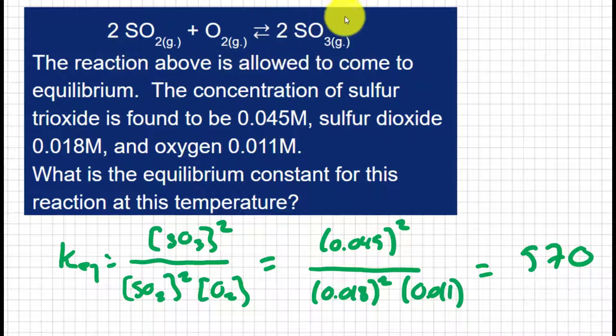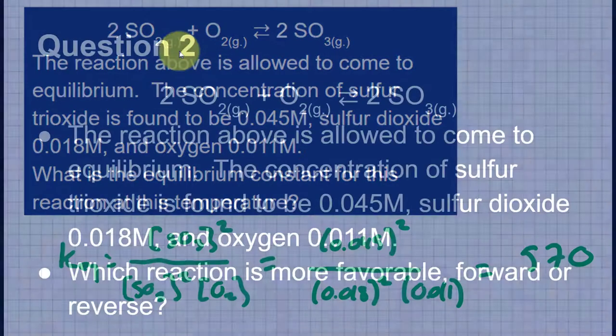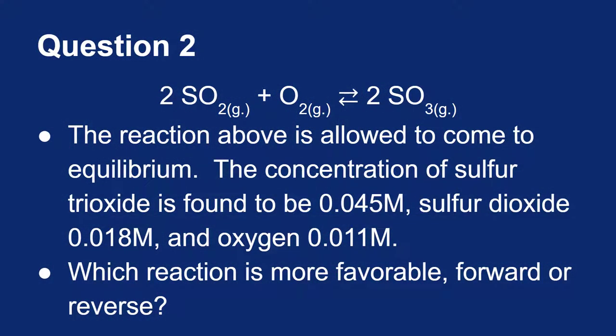Because K is larger than 1, I'm making more product and don't have as much reactant left over. So by looking at our K value, we know the forward reaction is more favorable.